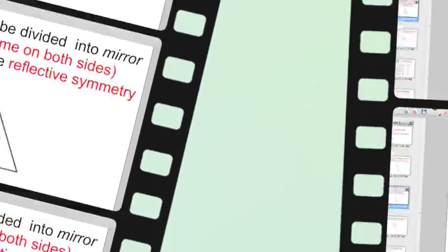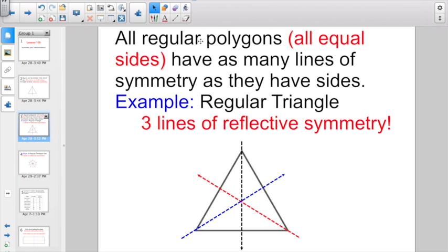And all regular polygons, that word regular means that they have all equal sides, have as many lines of symmetry as they have sides. If I have an example here of a regular equilateral triangle, there are three lines of reflective symmetry. I have the same if I cut a horizontal line right here. I also would have the same if I go from the vertex to the absolute middle of the opposing side. Three lines of reflective symmetry.